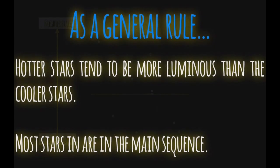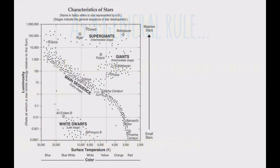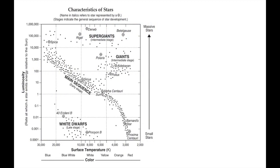As a general rule, when we look at that chart, hotter stars tend to be more luminous than cooler stars, meaning the hotter you are, the more bright you are. And also, most stars are in the main sequence. The main sequence is that band running diagonally across this chart. The main sequence are stars that are average-sized, and they're in an early stage of their development, meaning they were recently created.